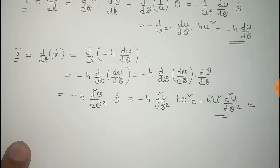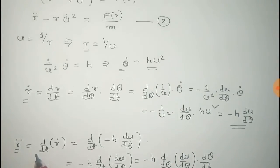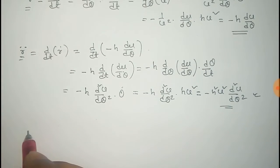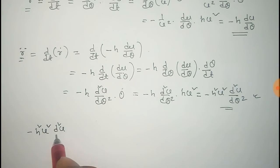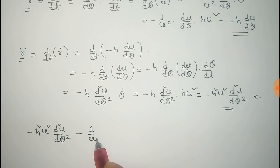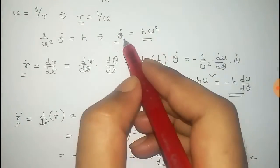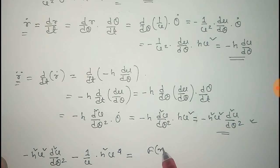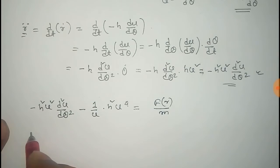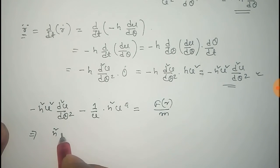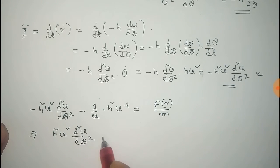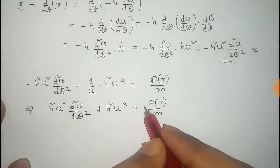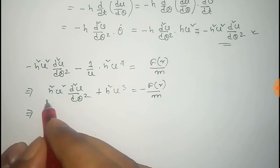Using this value of R double dot in equation number two, we get: minus H squared U squared times d²U/dTheta² minus (1/U) times Theta dot squared equals F(R)/M. Since Theta dot squared equals H squared U to the power 4, this becomes: minus H squared U squared times d²U/dTheta² minus H squared U cubed equals minus F(R)/M. Dividing both sides by H squared U squared, we obtain the required differential equation — the Binet equation for central force motion.